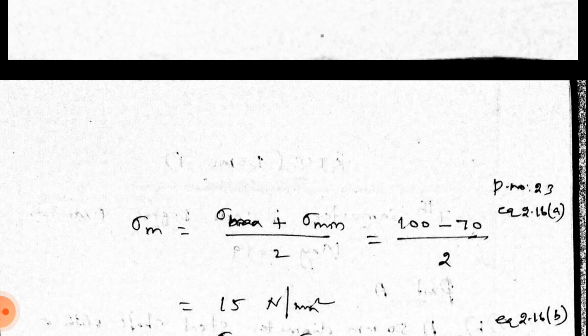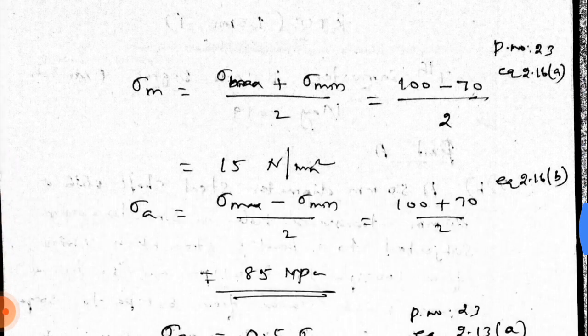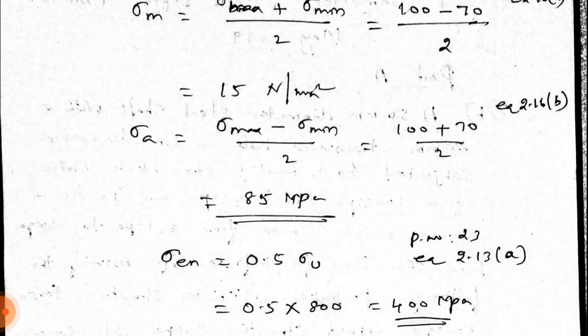Sigma m is the formula: sigma max plus sigma minimum divided by 2. Sigma max is 100, sigma minimum is minus 70. Page 23, equation number 2.16a. We get 15 MPa. Then, sigma a, the same previous formula. We are going to minus, so this is the plus side, 85 MPa.